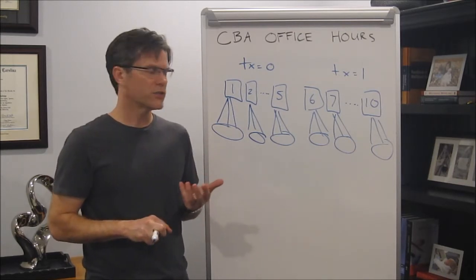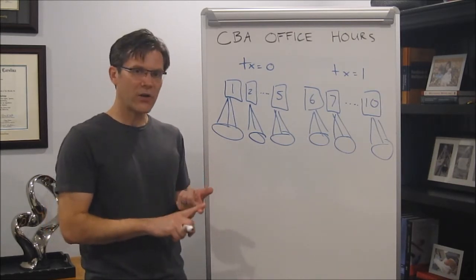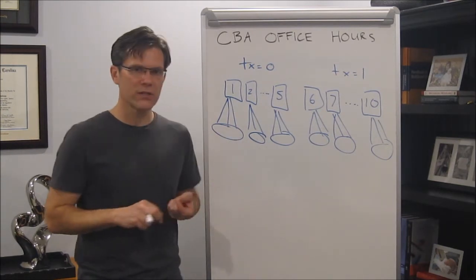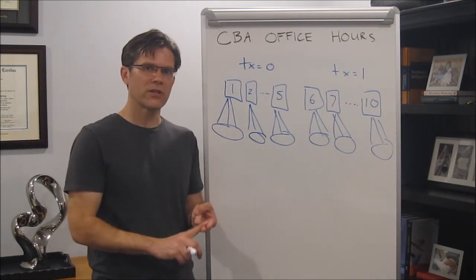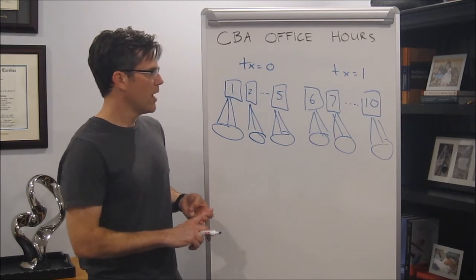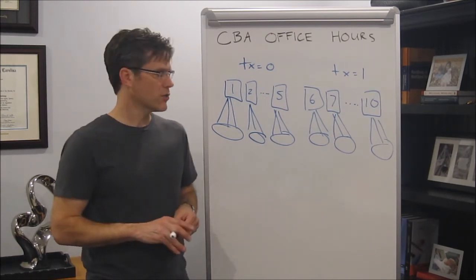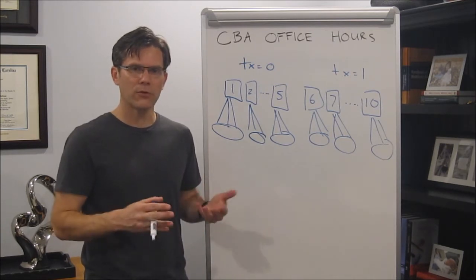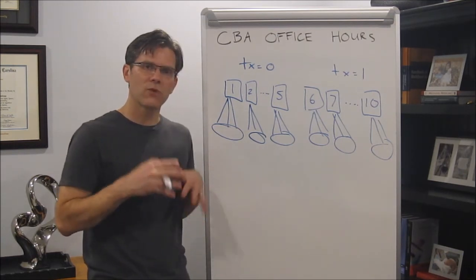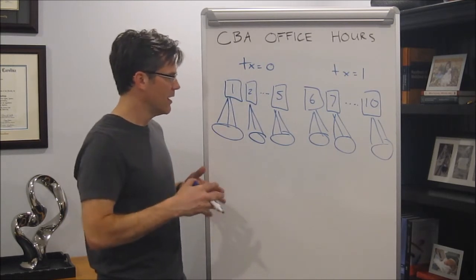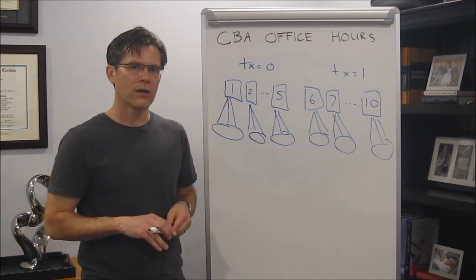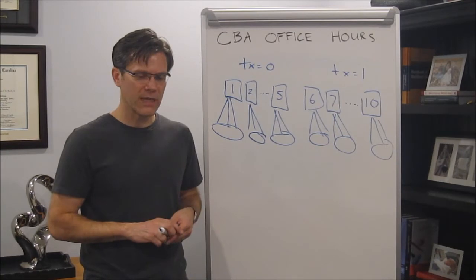The multi-level model is one way of accounting for dependence in nested data, but it's not the only way. We can fit standard general linear models like regression or ANOVA and correct the standard errors for cluster correlation. We can do a fixed effects modeling approach, popular in econometrics, or GEE modeling, popular in health research. Within the behavioral, social, and educational sciences, the multi-level model is one of the most popular approaches for dealing with nested data, because it treats that dependence not as a nuisance but as a source of information to learn more about the population.